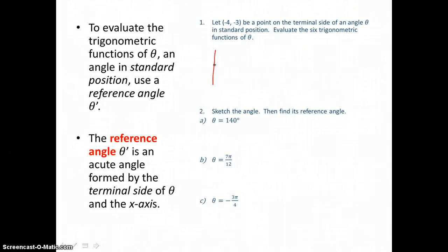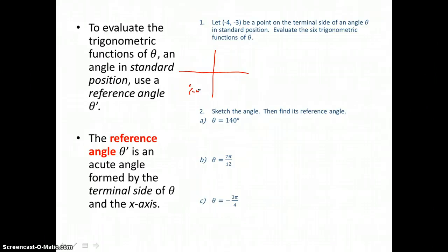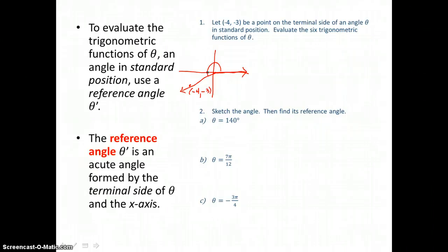So we'll graph our point on the coordinate plane in the third quadrant, negative 4, negative 3. And we'll draw the terminal side of this angle theta through that point. The initial side, remember, is the positive x-axis. So we've rotated into the third quadrant with theta.